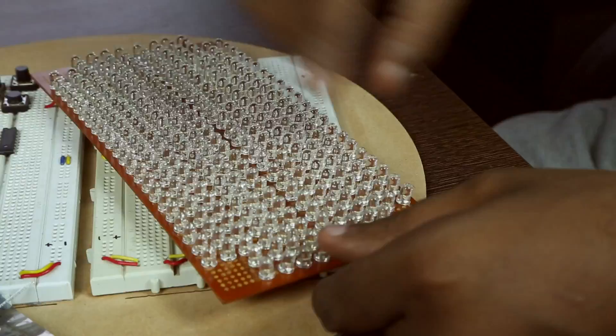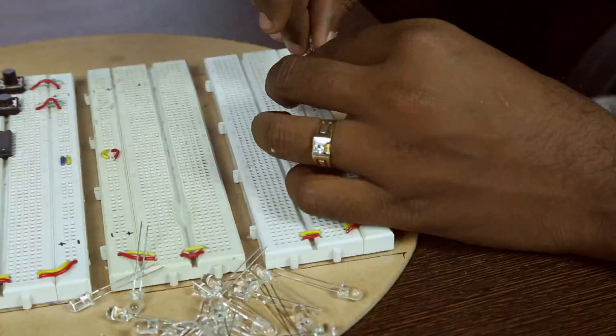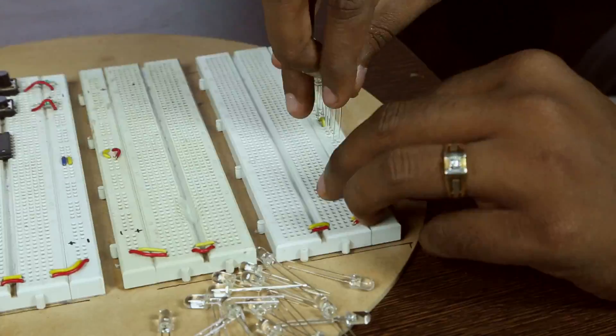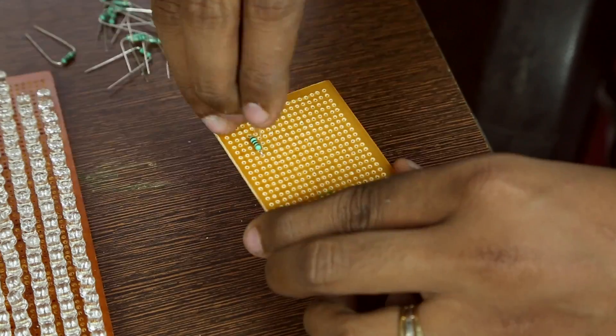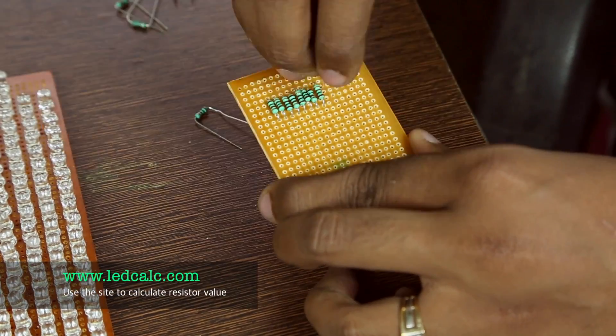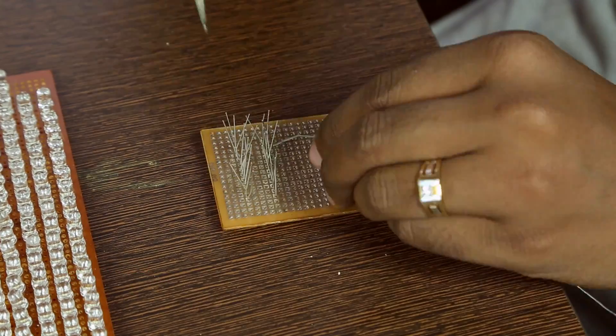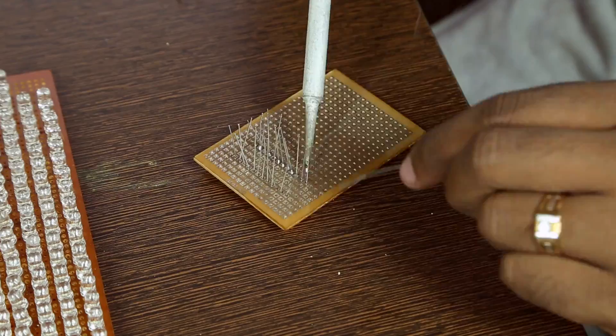I counted the number of LEDs in a row. Then I inserted the same number of LEDs on a breadboard to determine the resistor value and the power required. I found out that 100 ohms will be a perfect resistor. So for 12 rows, I connected 12 resistors, one next to the other and soldered them to the board.